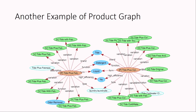Here is another example of a product graph. The central entities are detergents, and the peripheral entities are concept nodes, which represent attributes of the product like form, function, brands, color, and so on. We want to build a graph like this for all different verticals and from all different sources.